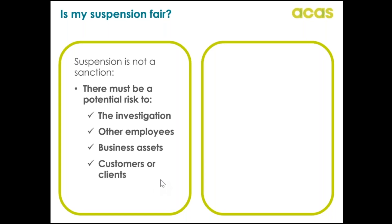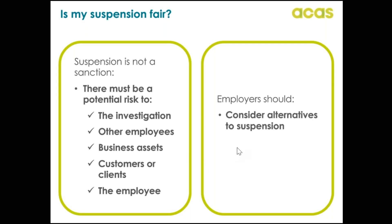There could also be a risk to customers or clients, for example vulnerable service users who need to be safeguarded from potential harm. Suspension may also be used to protect the employee themselves, for example to ensure the employee does not suffer physical or emotional harm from other employees. The decision whether to suspend should be reasonable and should not be a knee-jerk reaction. If an employer identifies a risk, they should consider alternative options first — such as a transfer to another site, a temporary change in role, or working from home.